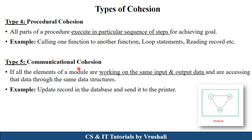The next type is communicational cohesion, where all elements of a module work on the same input and output data. For example, you update a record in a database and then send that data to a printer for printing. Both input and output work at the same time, with communication performed between all the elements and actions. This is called communicational cohesion.